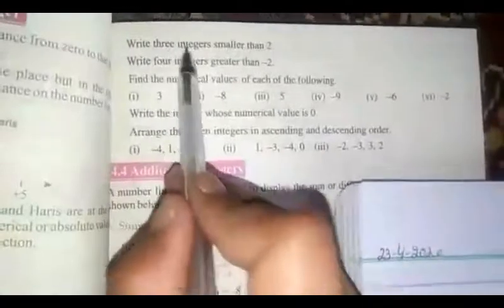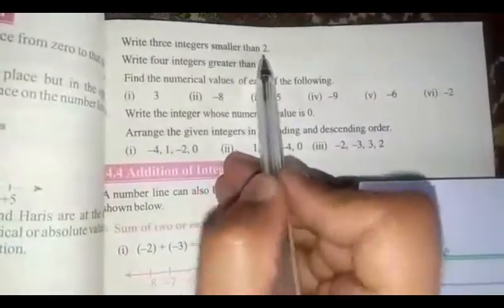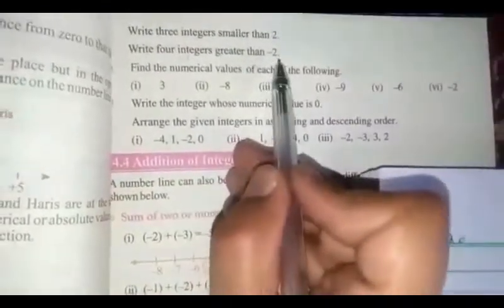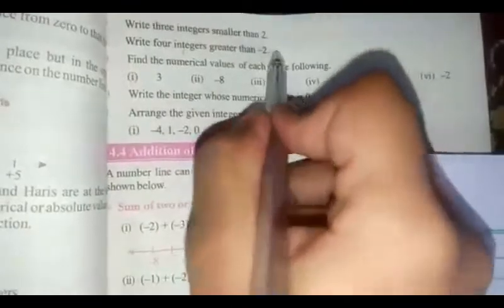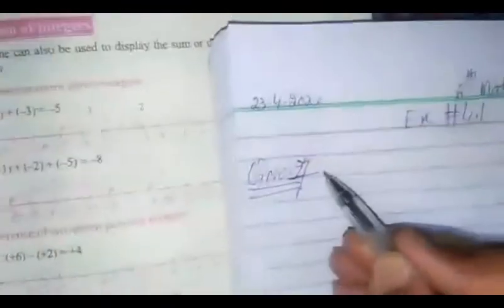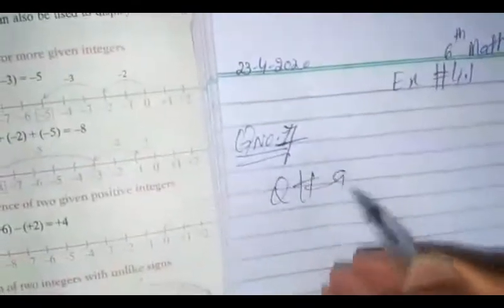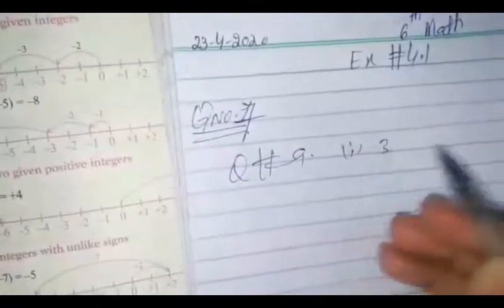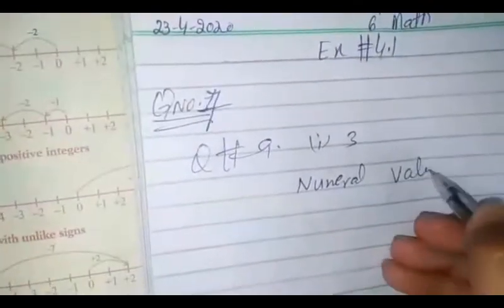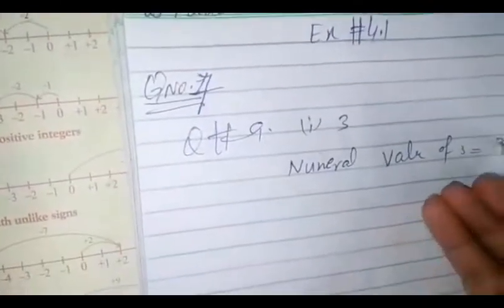Question number 7: write three integers smaller than 2. It is similar to question number 6; you have to do it yourself. Write four integers greater than minus 2 — you have to write the four integers greater than minus 2 by yourself. Question number 9: find the numerical value of each of the following. The numerical value of 3 is equal to 3. The numerical value of minus 8 is 8. The numerical value of 5 is 5.